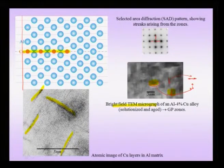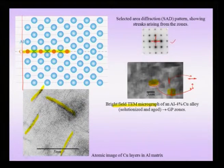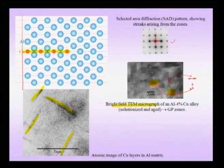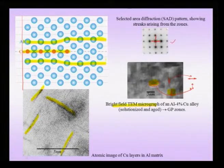Therefore two kinds of streaks are produced. There is a distinct signature of these GP zones in two forms: one in the selected area diffraction pattern where streaks are observed, and one in the bright field image where contrast comes from both the GP zones themselves and the strain fields surrounding them. The lattice planes that normally go straight are curved around the GP zone region, creating considerable strain wherever there is copper enrichment.